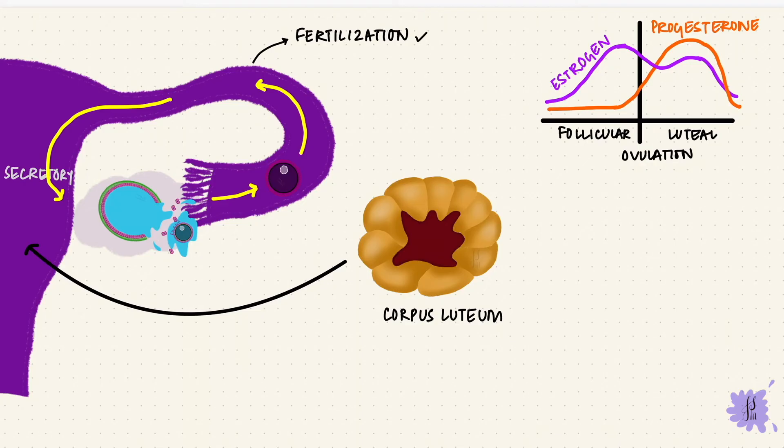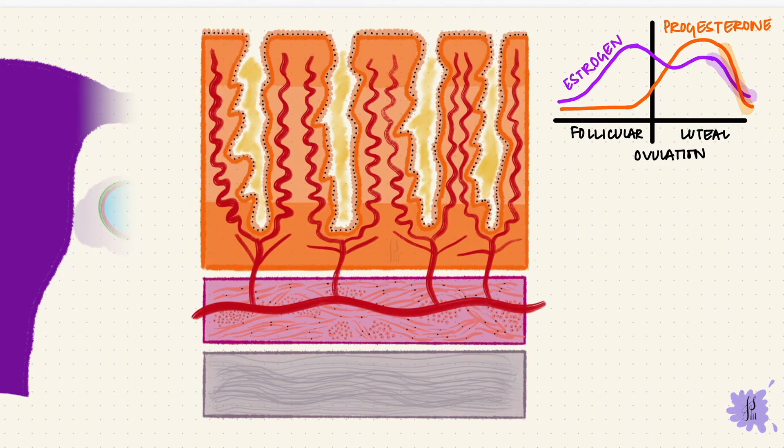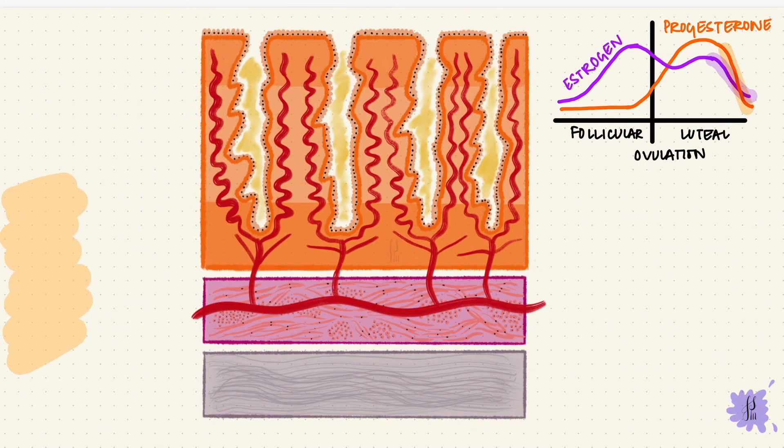So if fertilization takes place, then the endometrium is now prepared for the implantation of the blastocyst. And the corpus luteum would maintain the progesterone until the placenta takes over. But if there's no fertilization, and the corpus luteum degenerates, it loses its secretory function, so the estrogen and progesterone levels drop. There's loss of that stimulating effect that these two hormones had on the endometrial lining. So it starts involuting. So its thickness reduces.